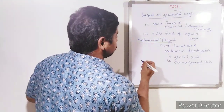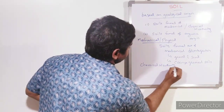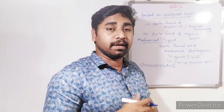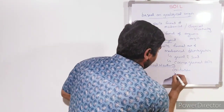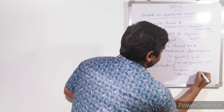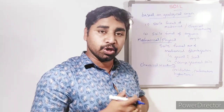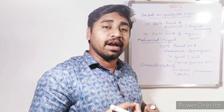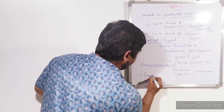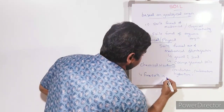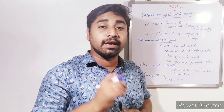Next, coming to chemical weathering — soil formed out of chemical processes like oxidation, hydration, or carbonation. Because of these processes, changes in the internal chemical composition take place, leading to the formation of finer fragments and finer particles. This results in the formation of fine soils like clay and silt.